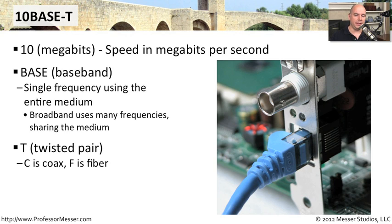Generally, as we look at these standards, if we see a T, it stands for twisted pair. If we see a C, it often means coax. And if there is fiber inside of that standard, it will have an F designation in the standard name.